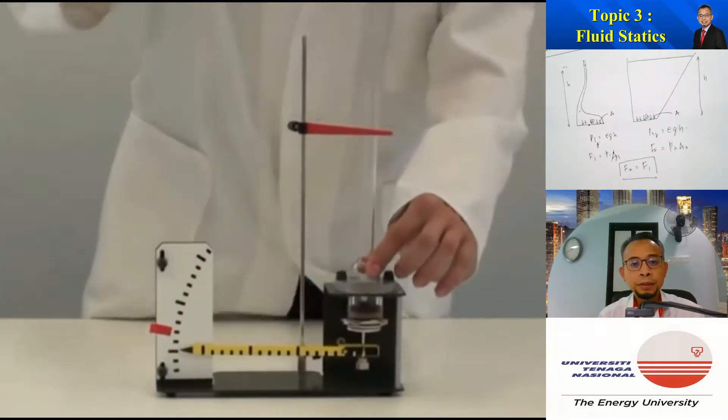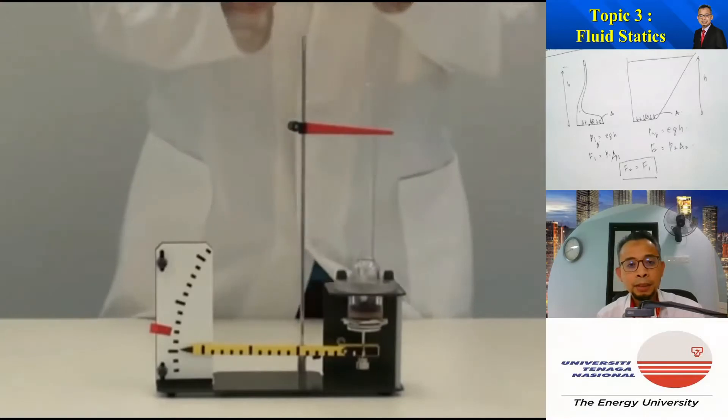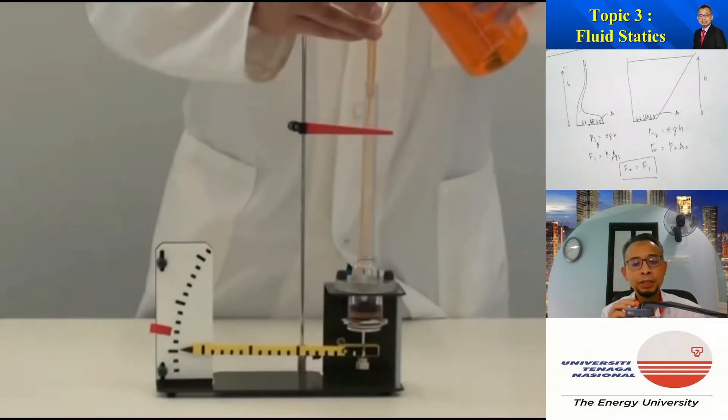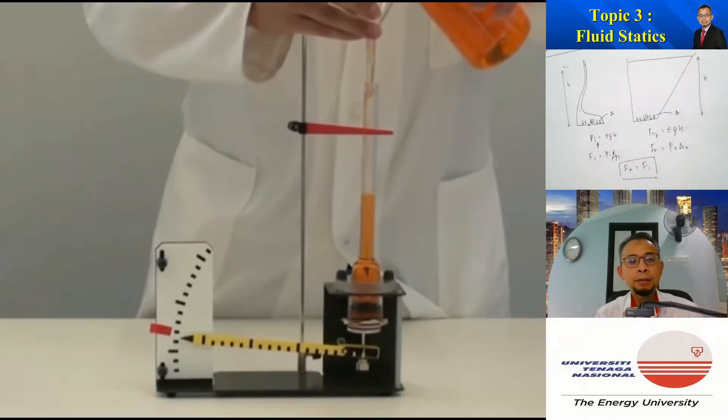So now he used a very small tube. The bottom part of the container is open and the area at the bottom is the same, so that the force that we measure at the bottom are equivalent. So he will pour the liquid inside the container up to the same level as the previous one.